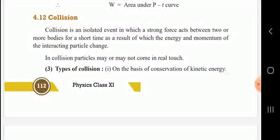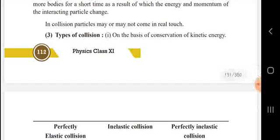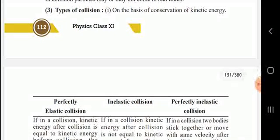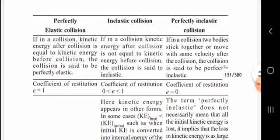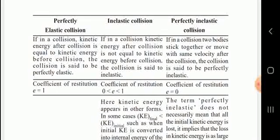Next, collision. A collision is an isolated event in which a strong force acts between two or more bodies for a short time. The colliding particles may or may not come into real contact. Types of collision based on conservation of kinetic energy: perfect elastic collision, inelastic collision, and perfect inelastic collision. In a perfect elastic collision, the kinetic energy after collision equals the kinetic energy before collision.